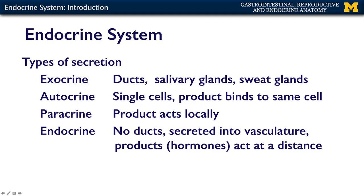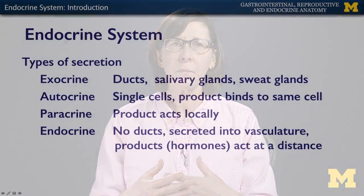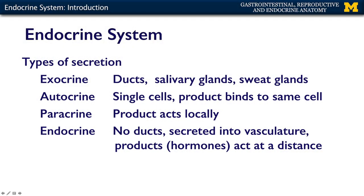There are several different types of secretion when talking about the whole body and the endocrine system specifically. You have exocrine secretion — systems with ducts, like salivary glands and sweat glands, which secrete a product into a duct leading to the surface of your skin or the lumen of your gut. We have autocrine secretion, where a single cell makes a product, secretes it, and it comes back and binds on that same cell. We have paracrine secretion, meaning nearby or local, where cells secrete a peptide or hormone that acts on nearby cells. And then we have endocrine — no ducts, secreting into the vasculature, with products acting at a distance.